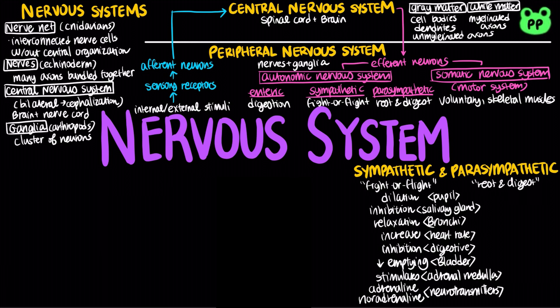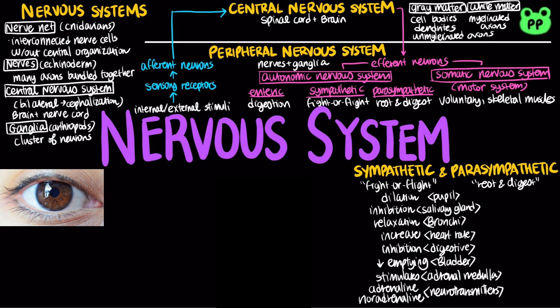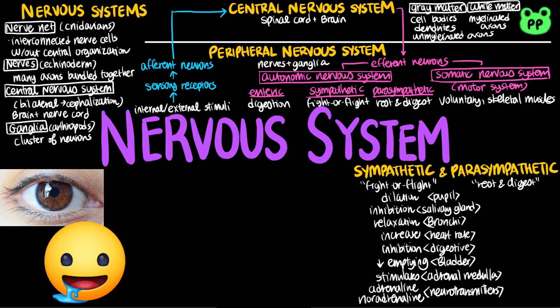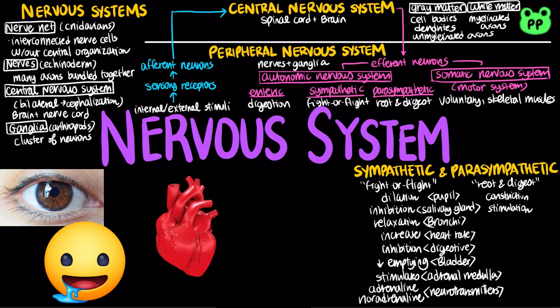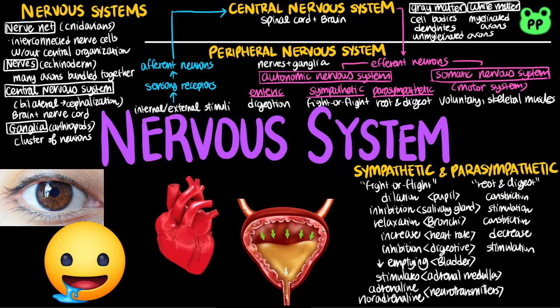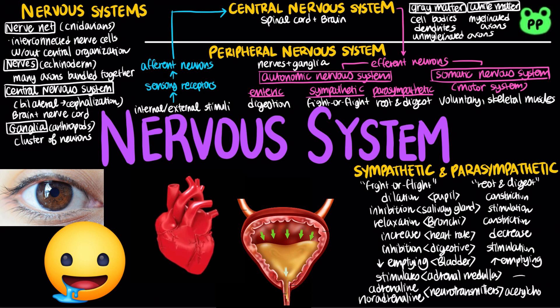On the other hand, the parasympathetic nervous system constricts the pupil of the eye, stimulates salivary gland secretion, constricts bronchi and lungs, slows the heart, stimulates the digestive system, stimulates emptying of the bladder, and uses the neurotransmitter acetylcholine.